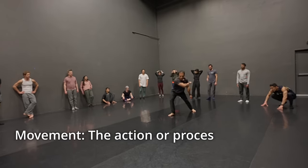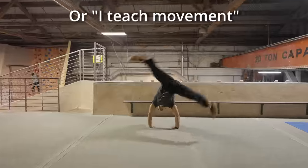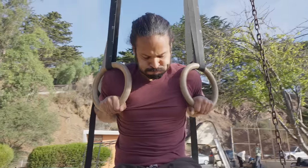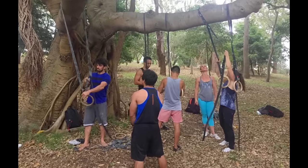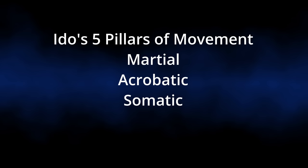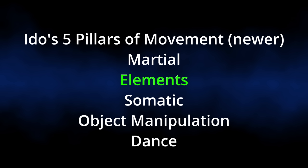First, what are we talking about when we talk about a movement practice? The dictionary definition is action or process of moving or of changing place or position. But what we really mean when we say 'I study movement' is that we endeavor to study all the different ways that we can move, rather than specific scenarios or disciplines. In an internship in 2017, Ido defined movement using five pillars: martial, acrobatic, somatic, object manipulation, and dance. Recently, I've started to find this definition more inadequate, and Ido seems to agree as he's since changed his model.